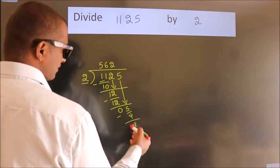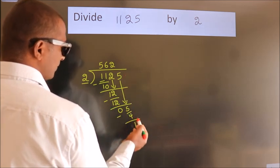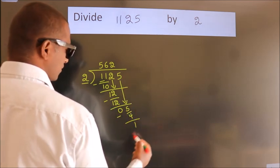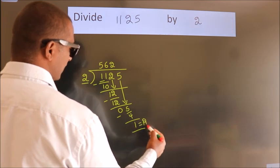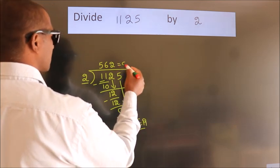After this, no more numbers to bring down, so we stop here. This is our remainder. This is our quotient.